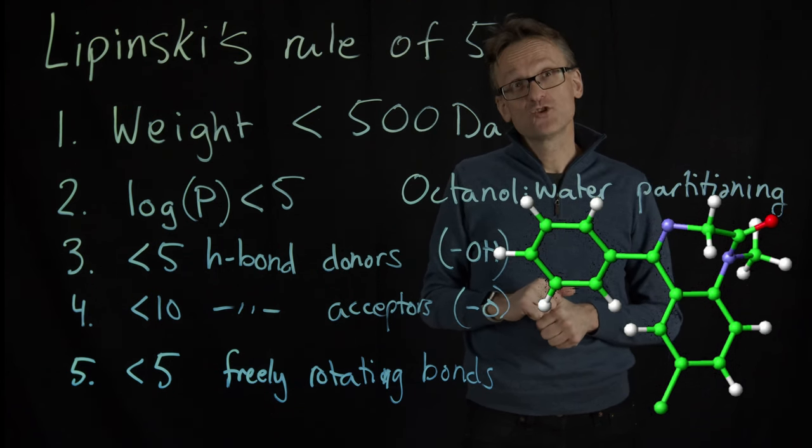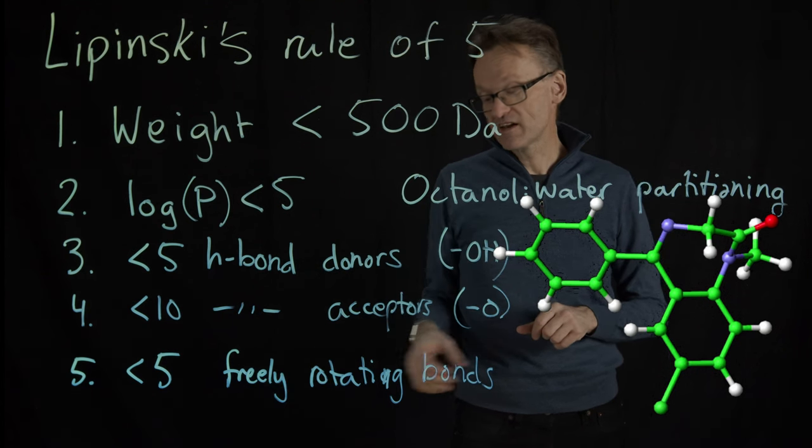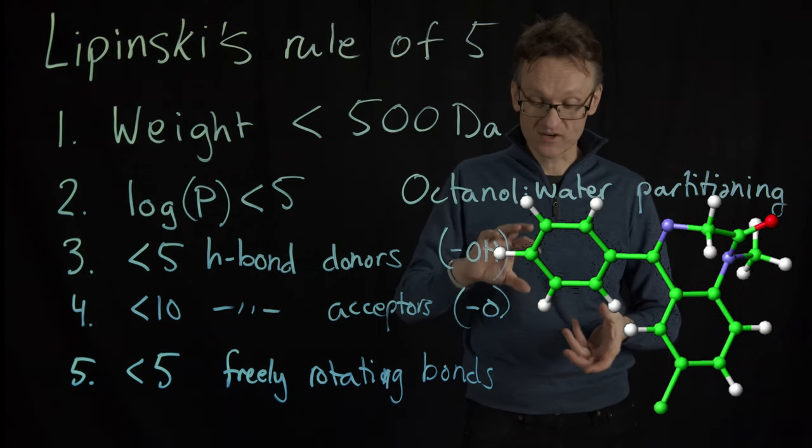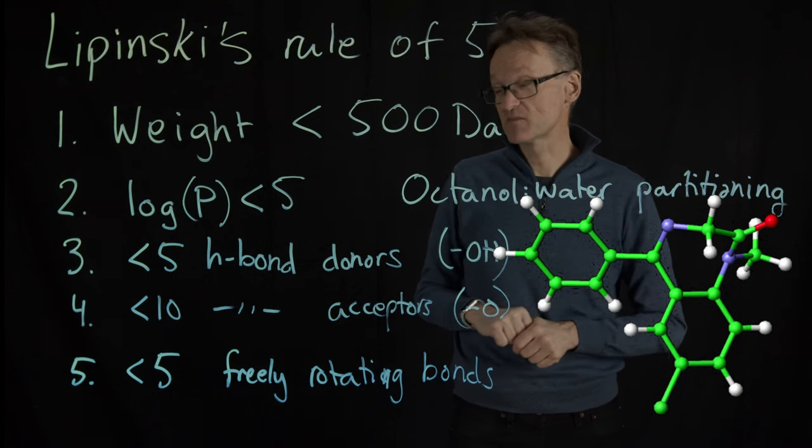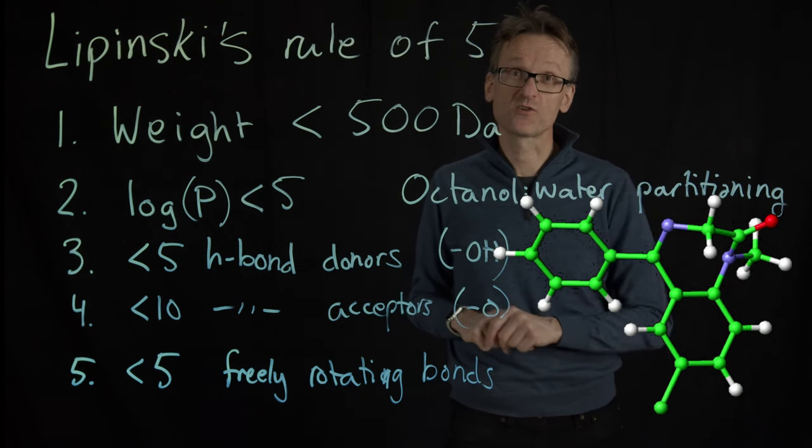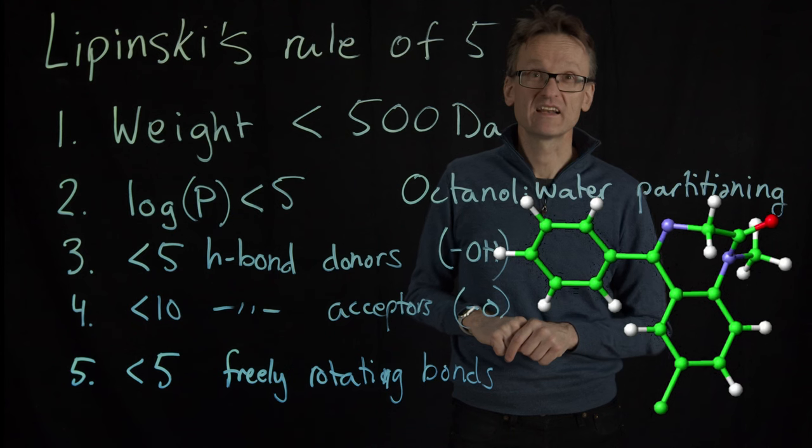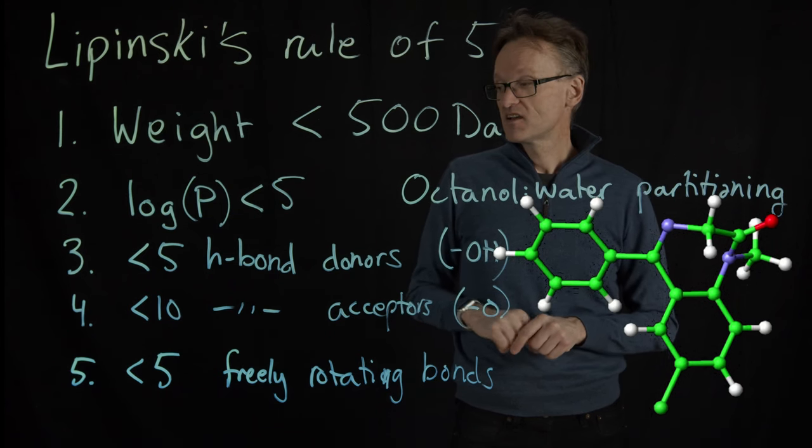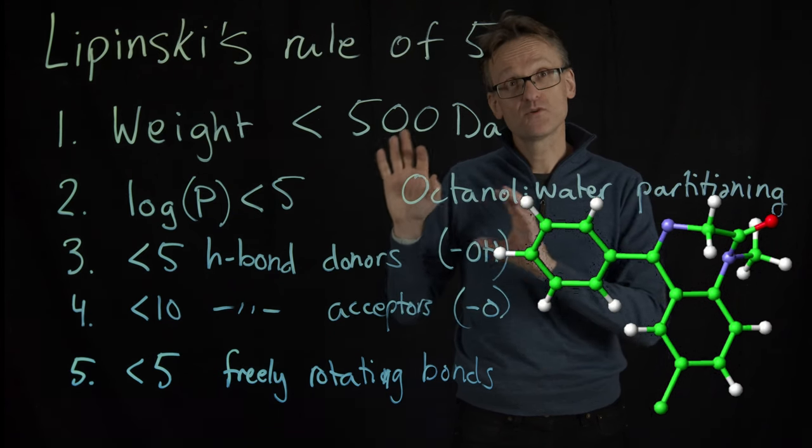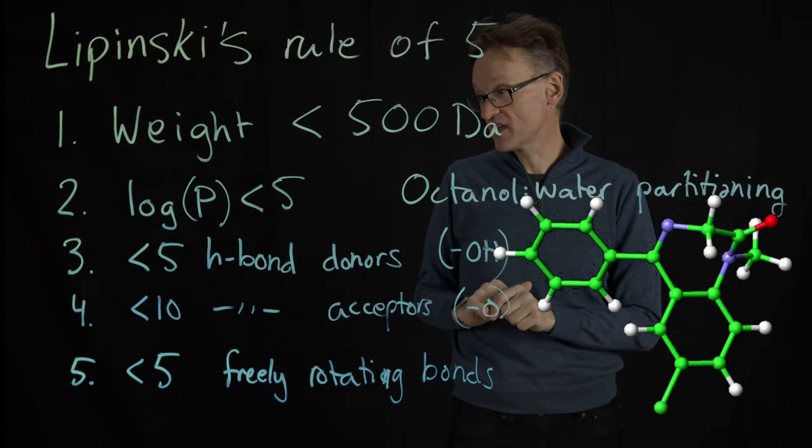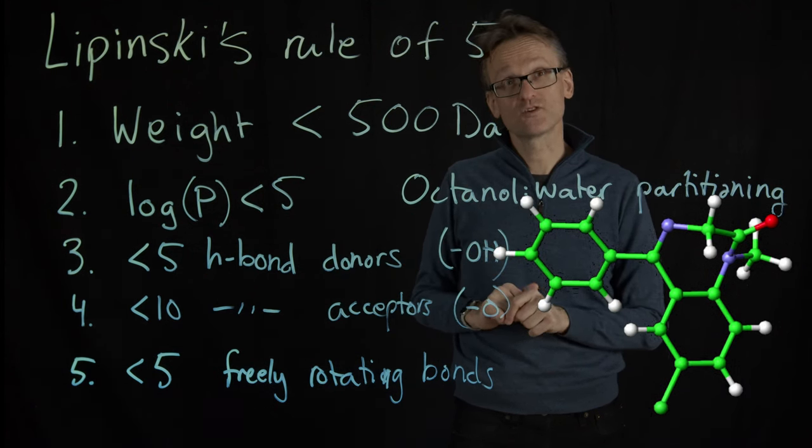The other less noble part is that the more freely rotating bonds there are, the harder it is for us to predict what the exact shape of it is. So simply it's easier to work with molecules that are not as flexible. But that wasn't really Lipinski's rule. Again, these are purely phenomenological. These are things that are usually used to make for good drugs.